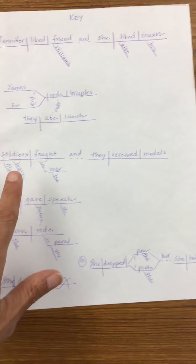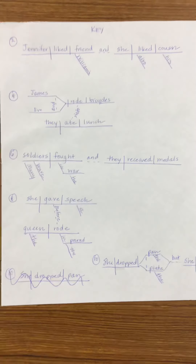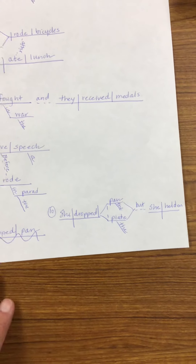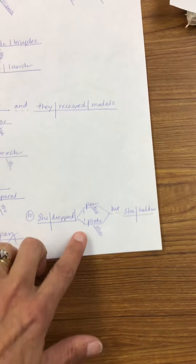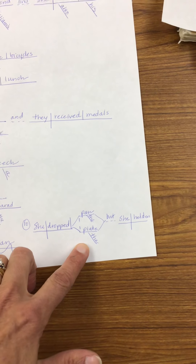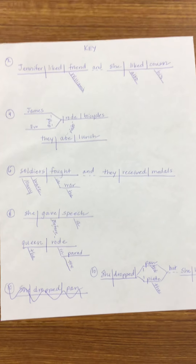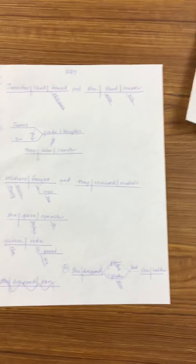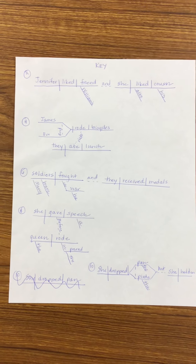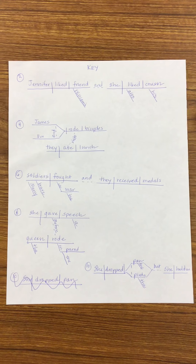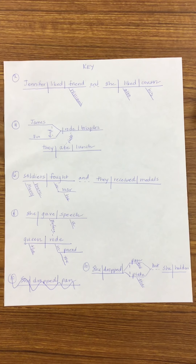Six is compound, so the two independent clauses are on the same plane. Number ten is a little weird because we have two direct objects — pan and plate — and we need to connect to the other independent clause, so I closed the rocket ship and drew a dotted line for the coordinating conjunction. We're really going to start pressing into complex sentences and next unit go into compound-complex. If you have questions, please reach out to me and schedule some time.